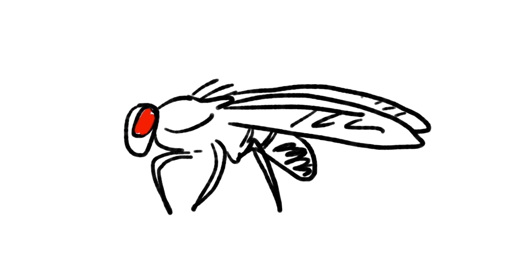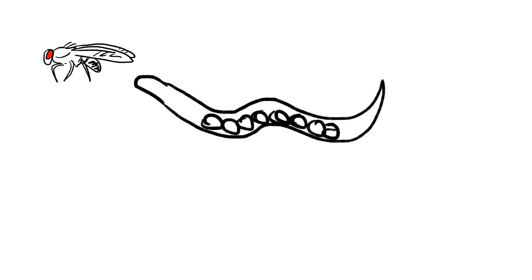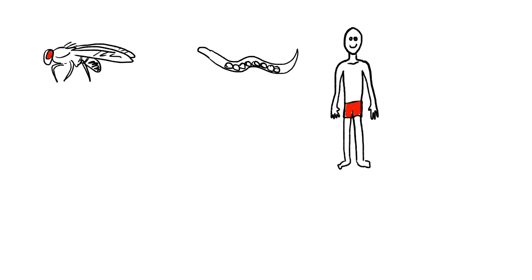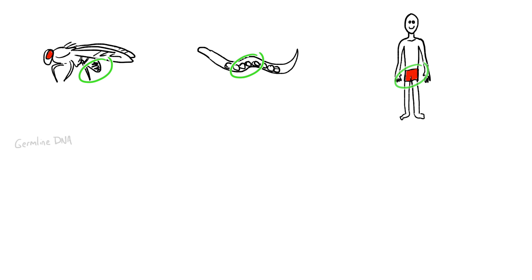If you're an animal, whether a fly, a worm, or a human, you face the problem of how to protect your germline from transposons and other harmful DNA elements.